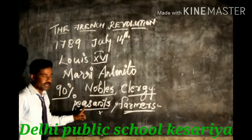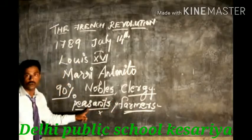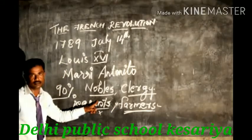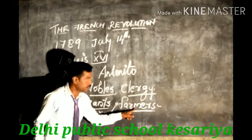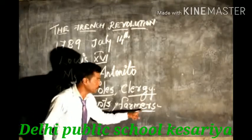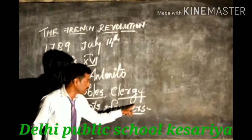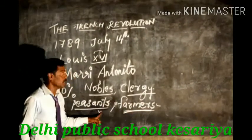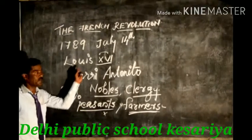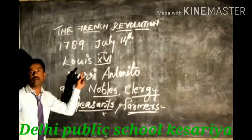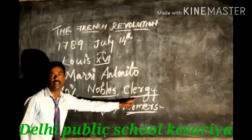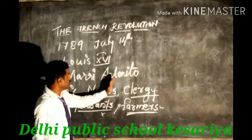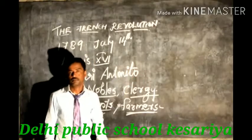To clarify: peasants are those working on others' land and earning their livelihood, while farmers have their own land and cultivate it. 90% of French people were peasants and 10% were nobles and clergy who were free from taxes. That was the situation of France when Louis XVI came to power.